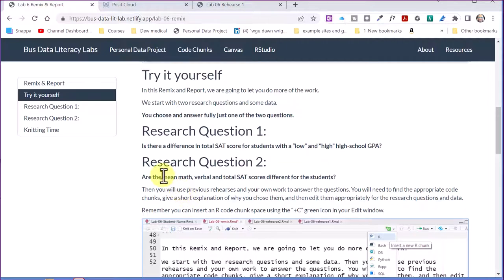The other question is, are the mean math, verbal, and total SAT scores different for the students? Now this doesn't have a categorical variable like the high school high and low GPA, but we've got three quantitative variables. So that would be the ANOVA, another example in the second rehearse in Lab 6.